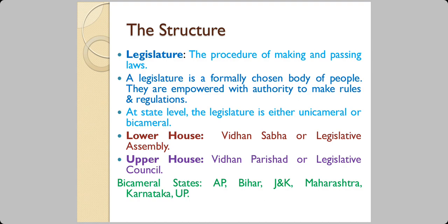Unicameral means only one house and bicameral means two houses. The lower house is called Vidhan Sabha in Hindi, also known as the Legislative Assembly. The upper house is known as Vidhan Parishad in Hindi, also called the Legislative Council. The bigger or more populous states have a bicameral type of legislature — states like Andhra Pradesh, Bihar, Jammu and Kashmir (now a Union Territory), Maharashtra, Karnataka, and Uttar Pradesh.